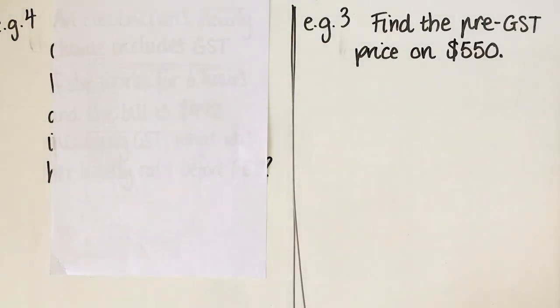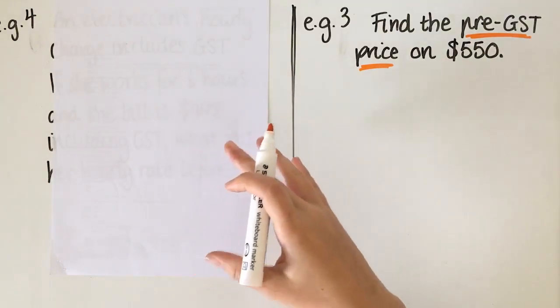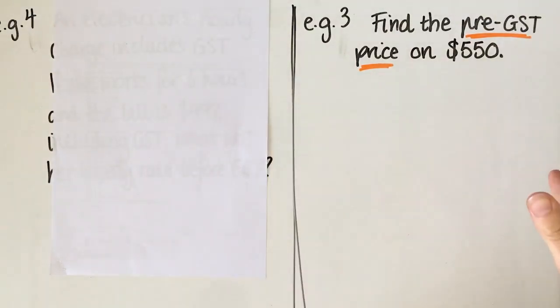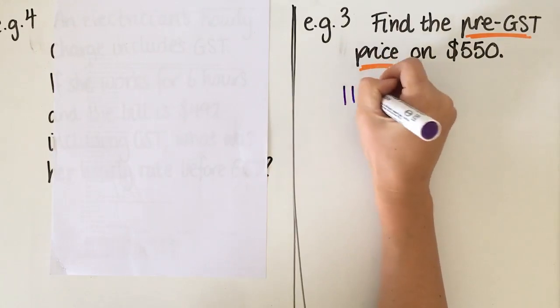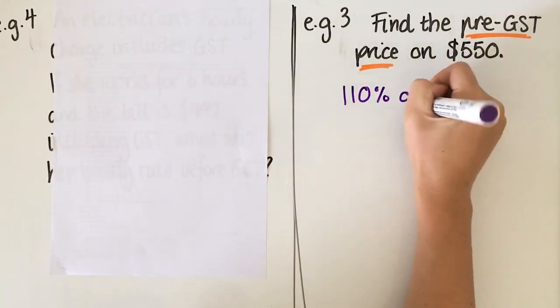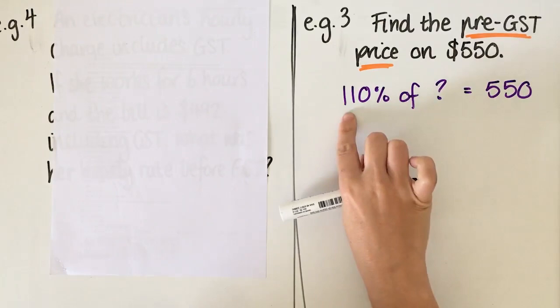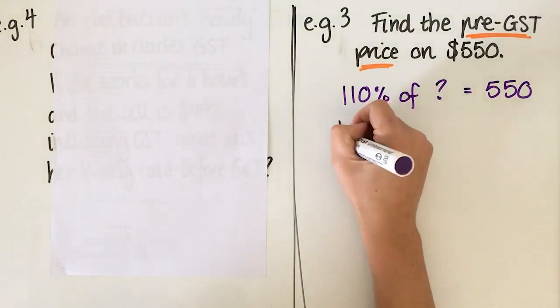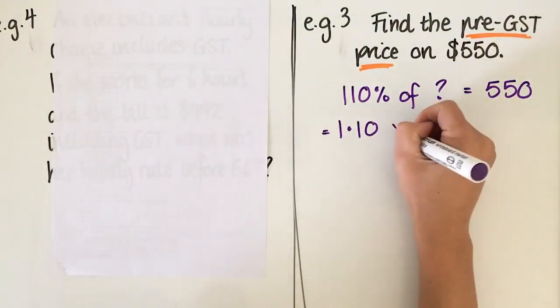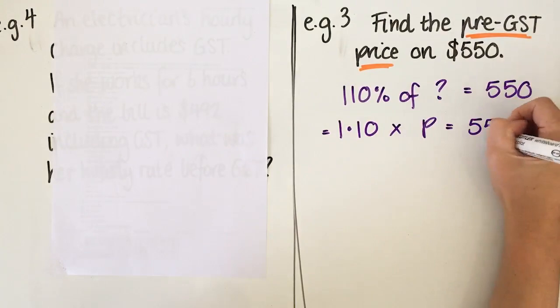Okay, so in this example here we're asked to find the pre-GST price. So that means that GST has already been added to it. So in our last examples there wasn't GST. We added it and then found the new price. This time we're working back the other way. So what we're saying here is that 110% of something is $550. Okay, because it's 100% plus the 10% extra from the GST. So we don't know what that something is. I'm going to change this to 1.10, like I'm changing it to a decimal. I'm going to call this P for price, and then I'm going to keep this as 550.